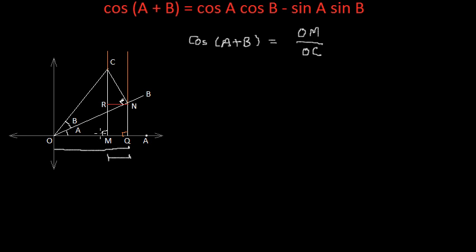And why are we doing so? Because this angle A is actually the part of triangle NOQ. So, OM can be written as OQ minus MQ divided by OC. This further can be written as OQ by OC minus MQ by OC.